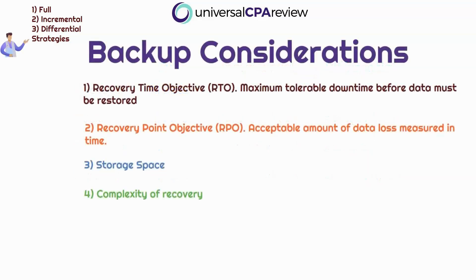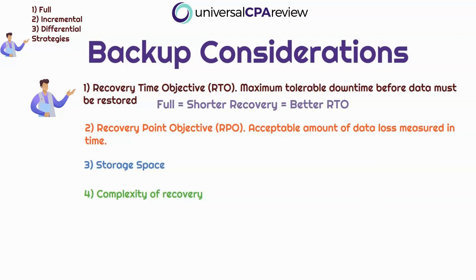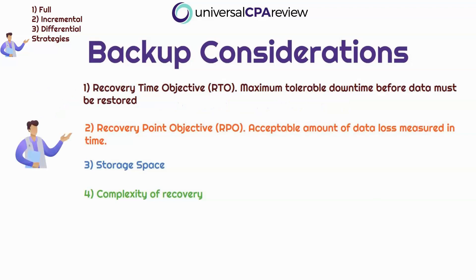So how do you decide which backup strategy to use? First is the recovery time objective — the maximum tolerable downtime before data must be restored. If you have a very short recovery time objective, then you're looking at a full backup because that's your fastest recovery time. Incremental and differential may require more restoration steps, and in the case of incremental backups you also have to ensure chronological order. Recovery point objective is the amount of data loss measured in time. Full backups offer the smallest RPO since they capture the entire data set, whereas incremental and differential may introduce some data loss since they rely on the last full backup.